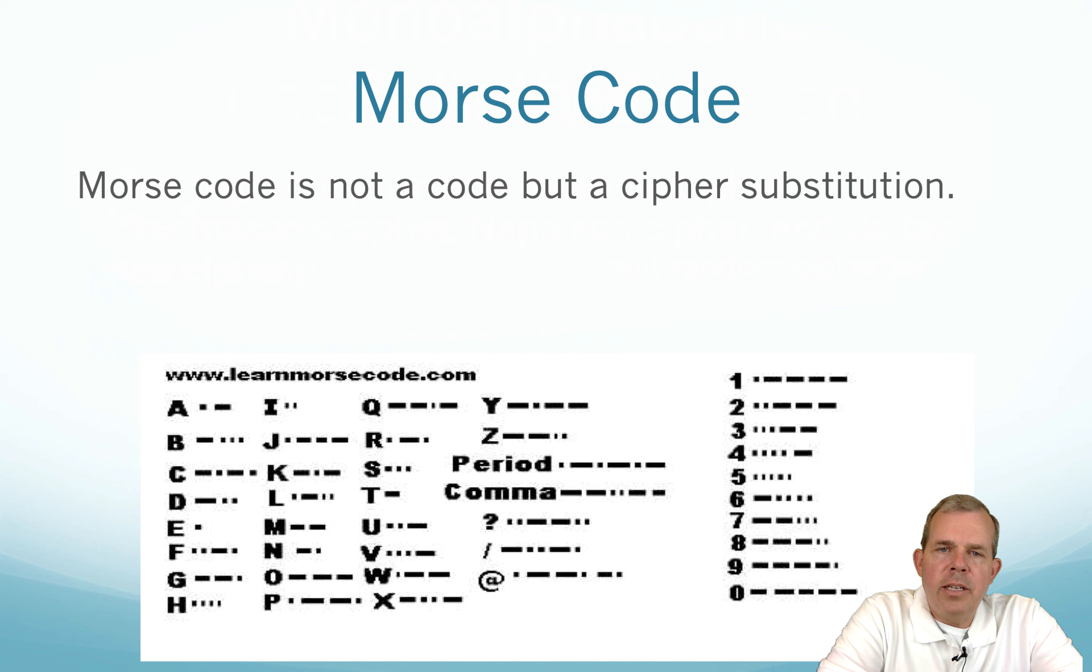Morse code is not really a cipher, it's just a substitution, it's not a code. So if you were a Morse code operator in the railroad days, you could probably look at the printout and see dots and dashes and understand it just as well as you could read in English letters. So it's not really a code, it's just a cipher substitution.